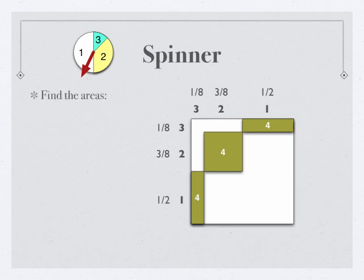So let's begin. We're going to find the areas. Let's look at that one. Well, the width of that is one-eighth, and the height is one-half. So the area is one-half times one-eighth, or one-sixteenth.